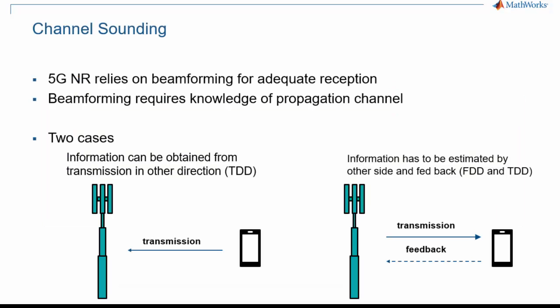Much of 5G NR relies on beamforming to provide sufficient SINR at the reception site, in particular for millimeter wave transmission. But beamforming requires knowledge of the propagation channel. The propagation channel depends on the transmit frequency. Therefore, if uplink and downlink operate on two different frequencies, as is the case in FDD, there is no choice but relying on the receiver to communicate information about the channel back to the transmitter.